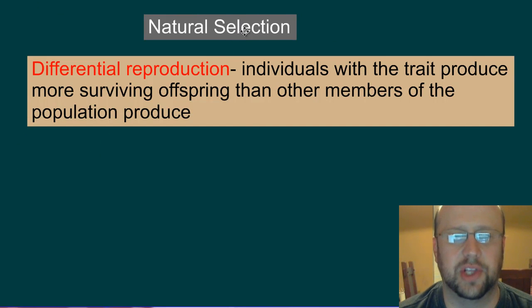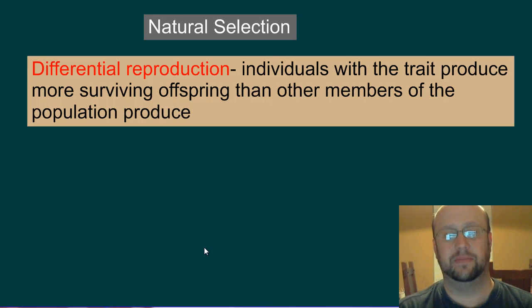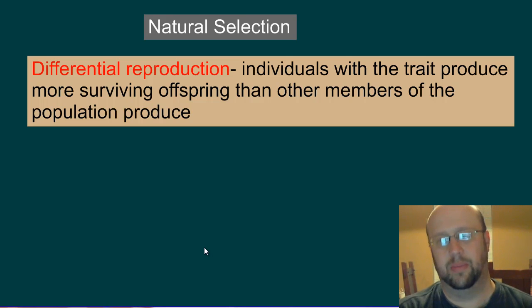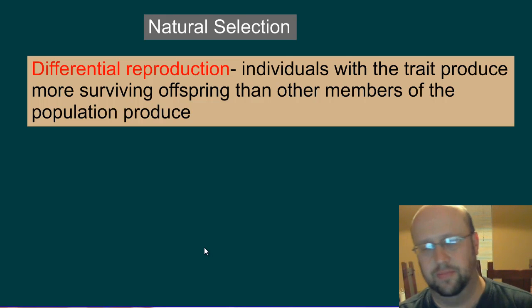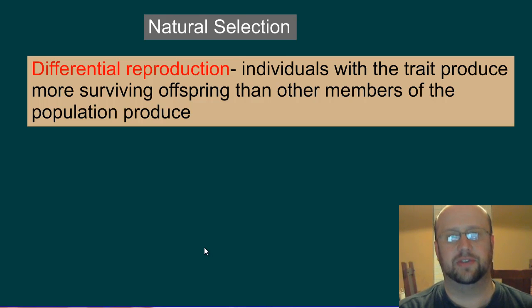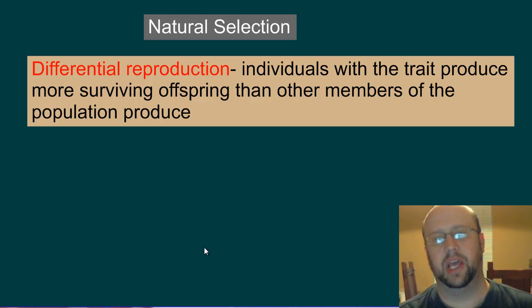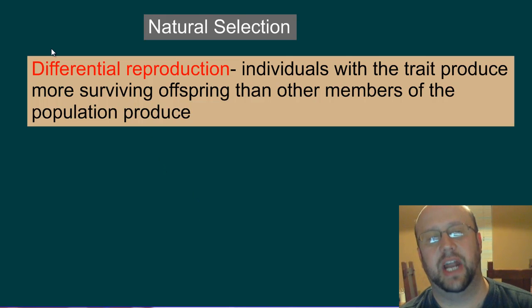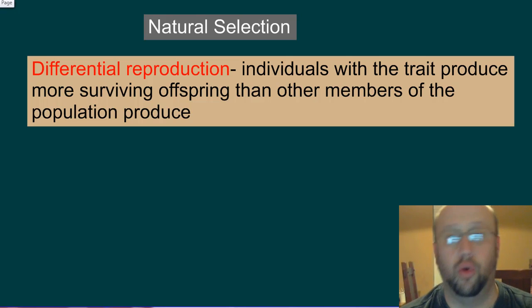What actually has to happen for natural selection to occur is what we call differential reproduction — the individuals that have that adaptation are going to produce more surviving offspring than the other members. Going back to the needle-leaf example, in a dry environment those plants have a better chance of surviving than a broadleaf plant that loses a lot of water to transpiration and is more likely to die. The ones with the positive, helpful trait are going to reproduce more than the ones without it.